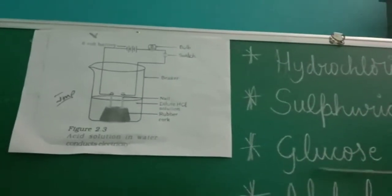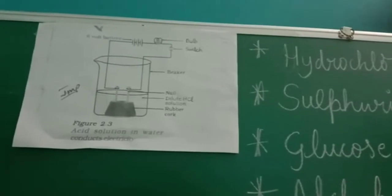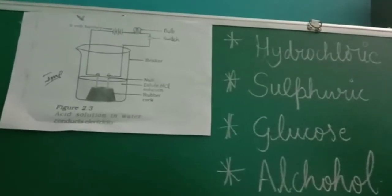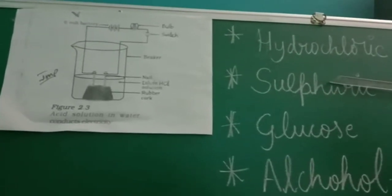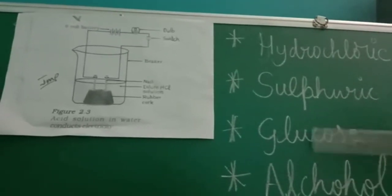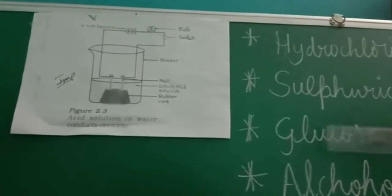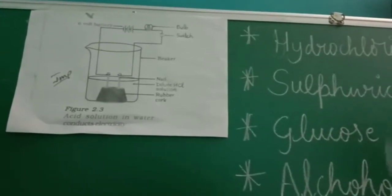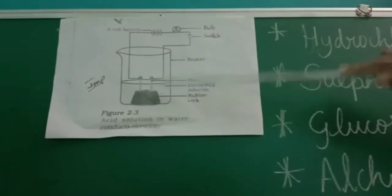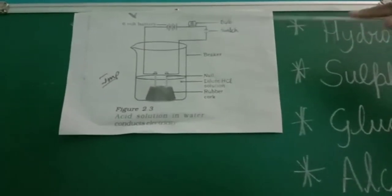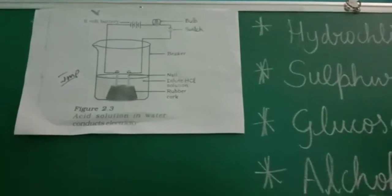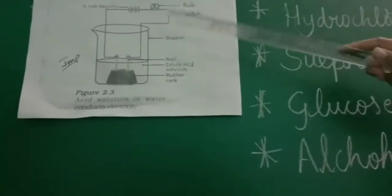Now let me take the example of glucose and alcohol. Hydrochloric acid and sulfuric acid are acids, whereas glucose and alcohol are not acids. When you take the example of glucose and add it to this solution, even though you connect the wires to the battery, current will not be generated. Similarly, if you add alcohol, again the current will not be generated.